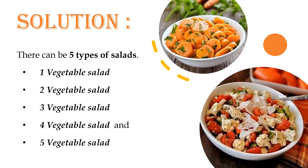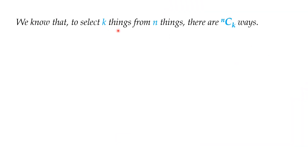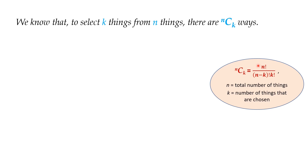Solution: Using the 5 given vegetables, it is possible to make 5 types of salads. They are 1-vegetable salad, 2-vegetable salad, 3-vegetable salad, 4-vegetable salad and 5-vegetable salad. We know that to select k things from n things, there are nCk ways.